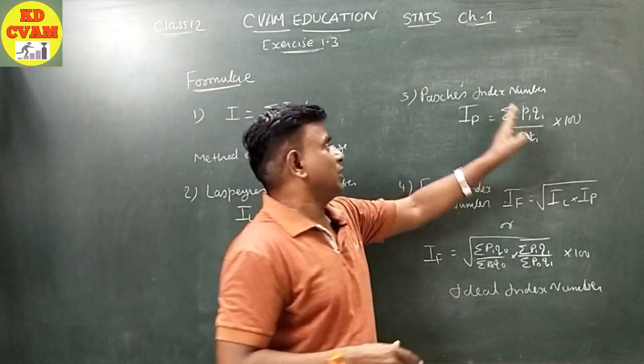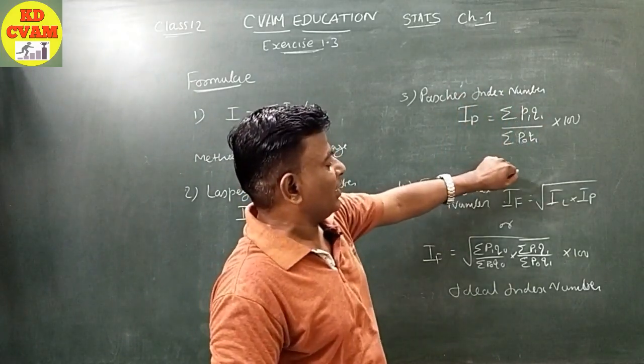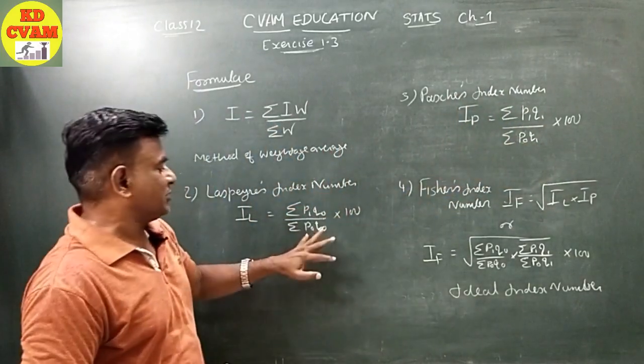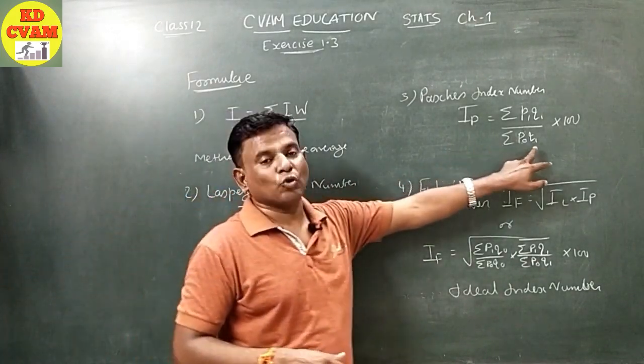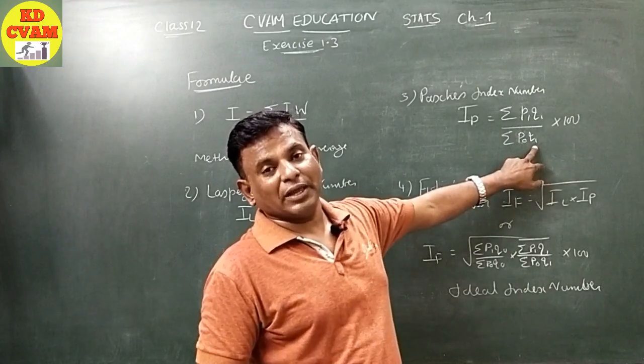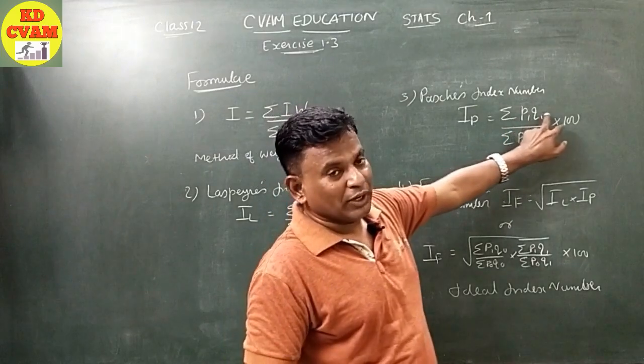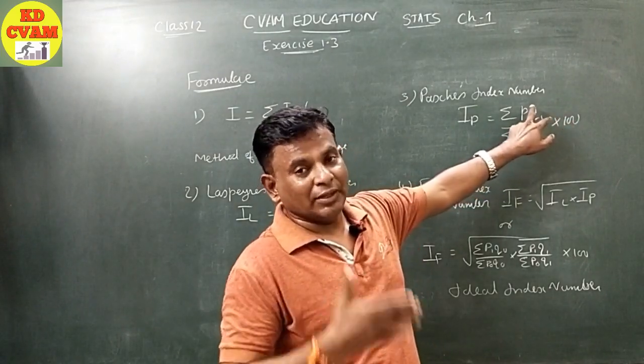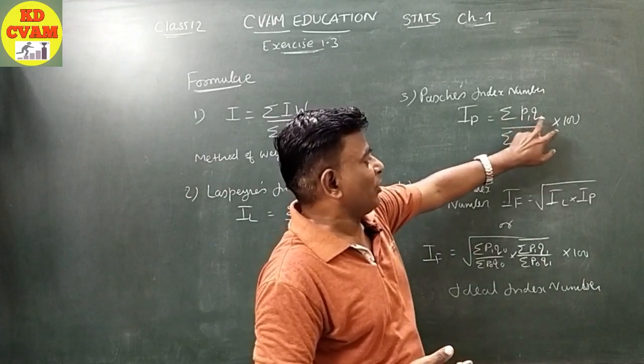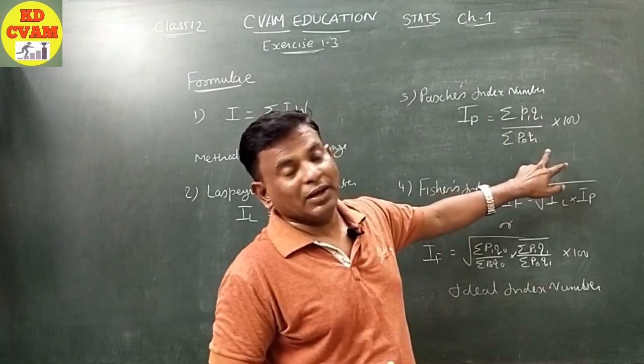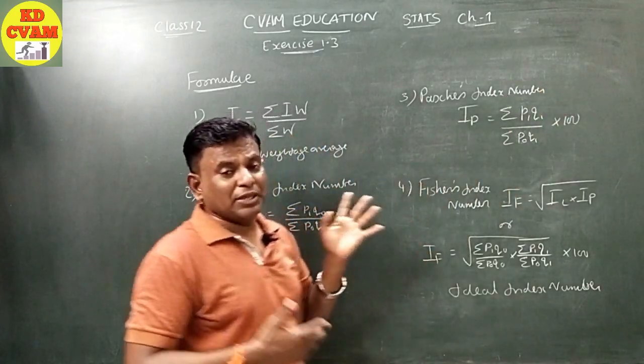After that comes Paasche's index number. Paasche said instead of considering quantity Q0 of the base year, you should take Q1. So Paasche's formula is: IP equals sigma P1Q1 upon sigma P0Q1 into 100. Both formulas have some limitations but also good utility.